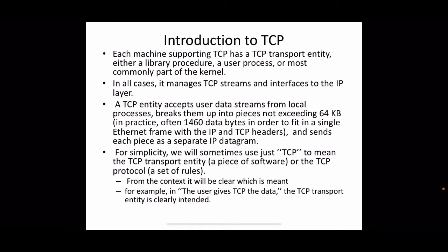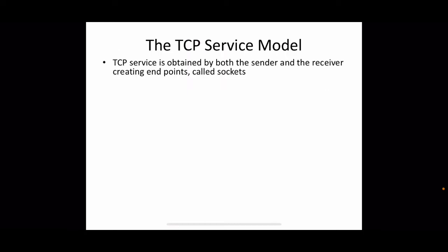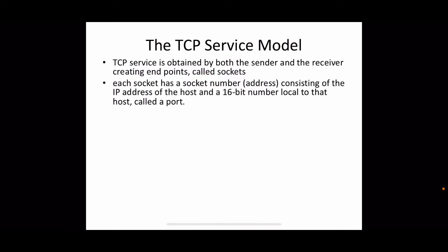TCP service is obtained by both the sender and receiver creating endpoints called sockets. To use the transport layer, we create an endpoint — those endpoints are called sockets. Each socket has a socket number consisting of the IP address of the host and a 16-bit port number local to that host. A socket is uniquely identified by the combination of the IP address and the port number, which identifies the application process.